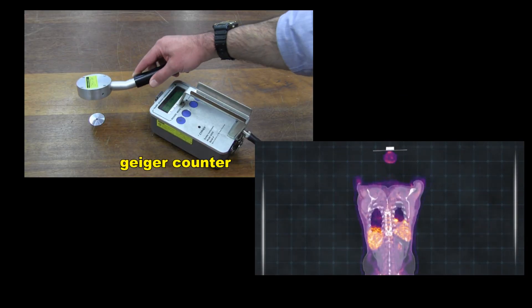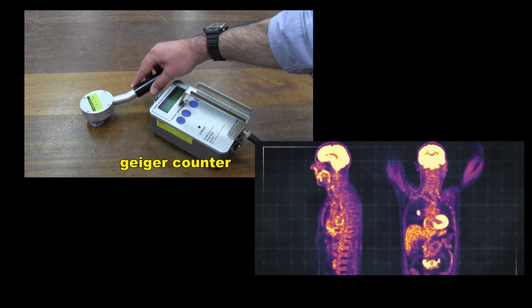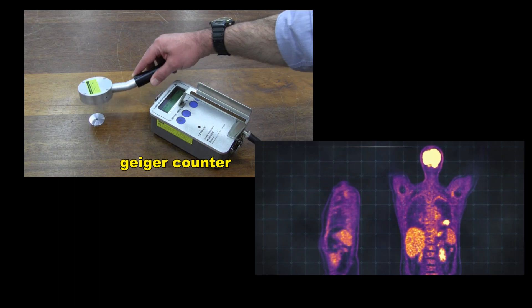We can't see nuclear radiation with our eyes, but we can detect it with Geiger counters and other specialized electronic equipment. Alpha particles are emitted at speeds of about 30,000 km per second, or about 10% of the speed of light.